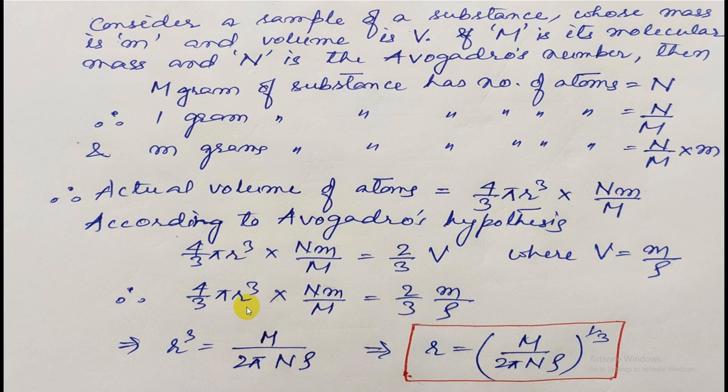We'll be finally left with r cubed, which will be given by M by 2 pi N rho. So the value of r will be the cube root of M by 2 pi N rho.